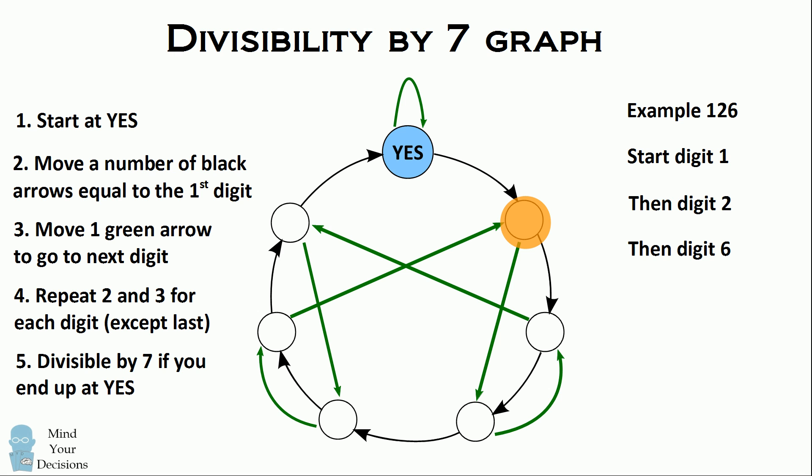Finally, we consider the last digit of six and we move six circles to end up at a final circle. We are back at the circle that says YES, and therefore this graph tells us that yes, the number 126 is divisible by seven. You can check on your calculator that 126 is divisible by seven.